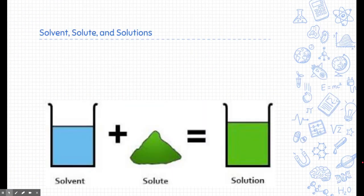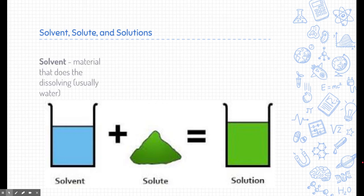So let's talk about what a solution is. A solution is made of a few parts. The first part is the solvent. The solvent is a material that does the dissolving and typically we use water as our material that does the dissolving. The solute is the material that is being dissolved. Typically it's an ionic compound or covalent compound and then the solution is just the two put together. So a solution is made of a solute dissolved inside a solvent.